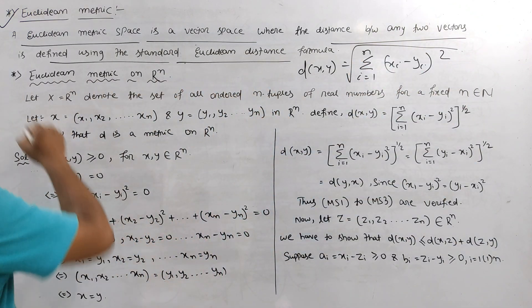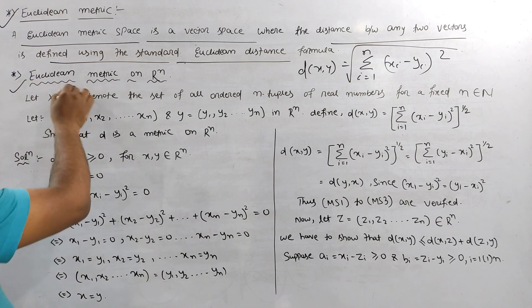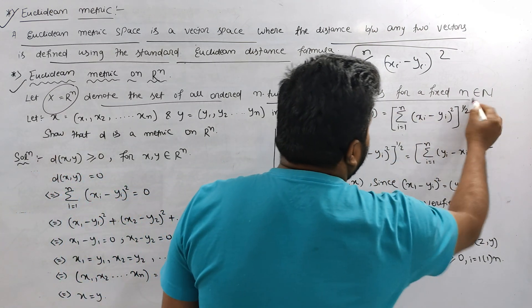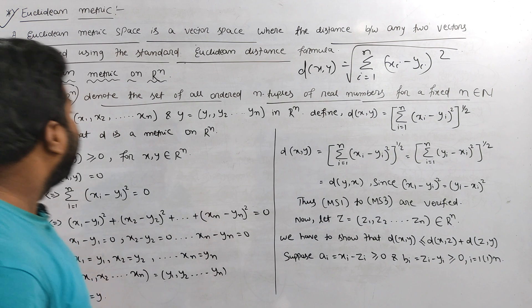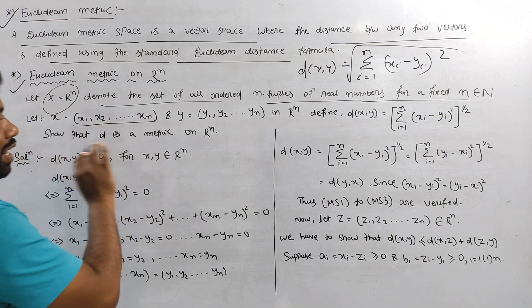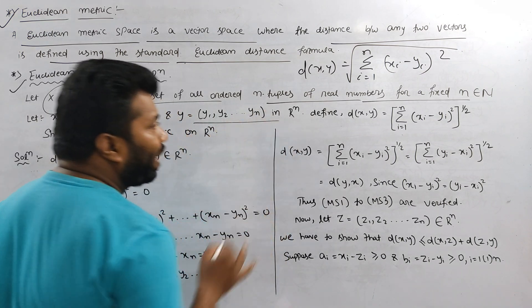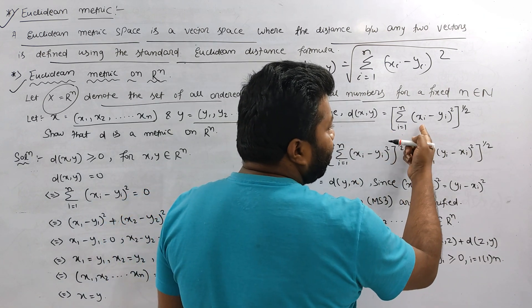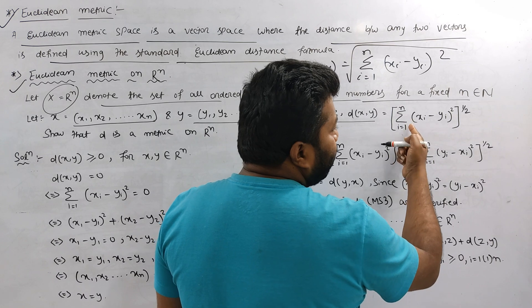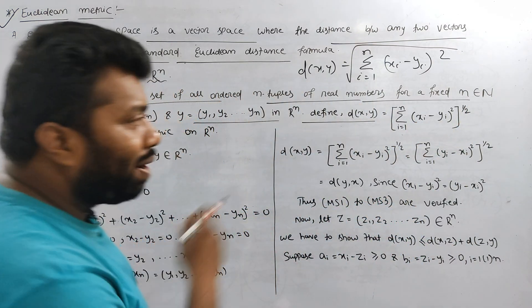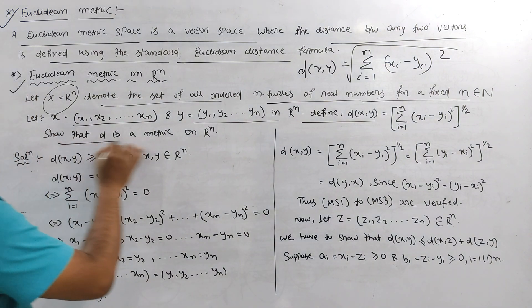Let x is R to the power n denote the set of all ordered n-tuples of real numbers for fixed n belongs to N. Then x equals x1, x2, x3, ... xn. In R to the power n, defined by d(x,y) equals summation i equals 1 to n, (x_i minus y_i)^2, square root over. So that it is a matrix space.